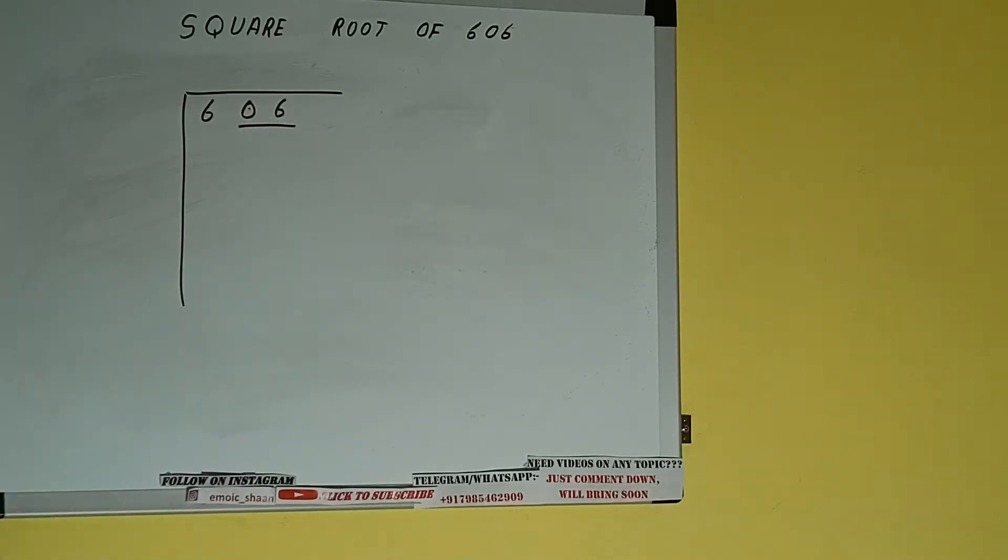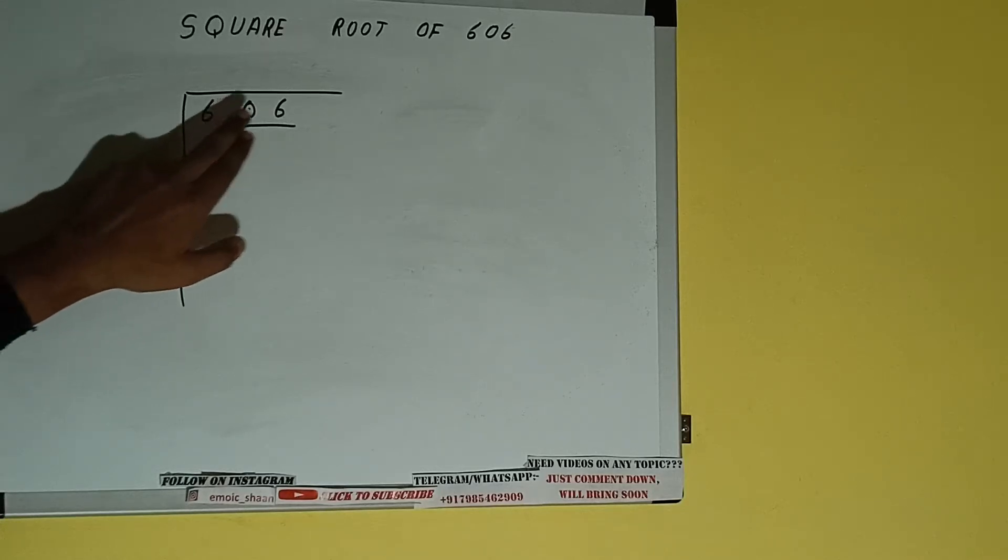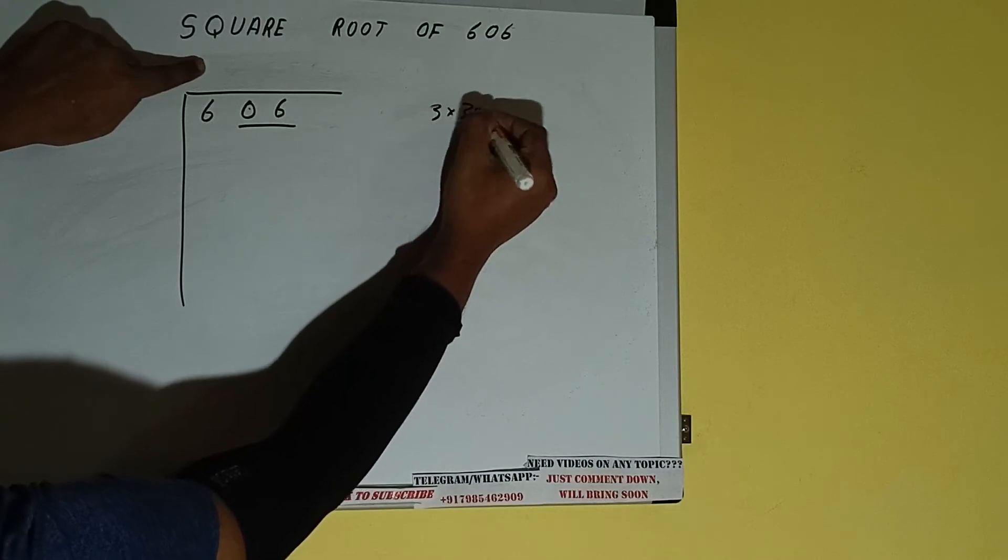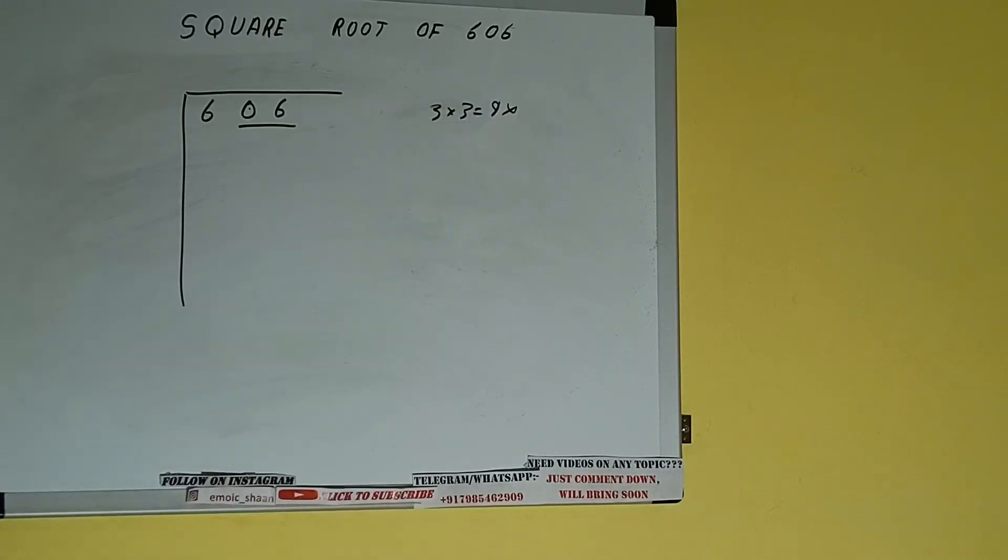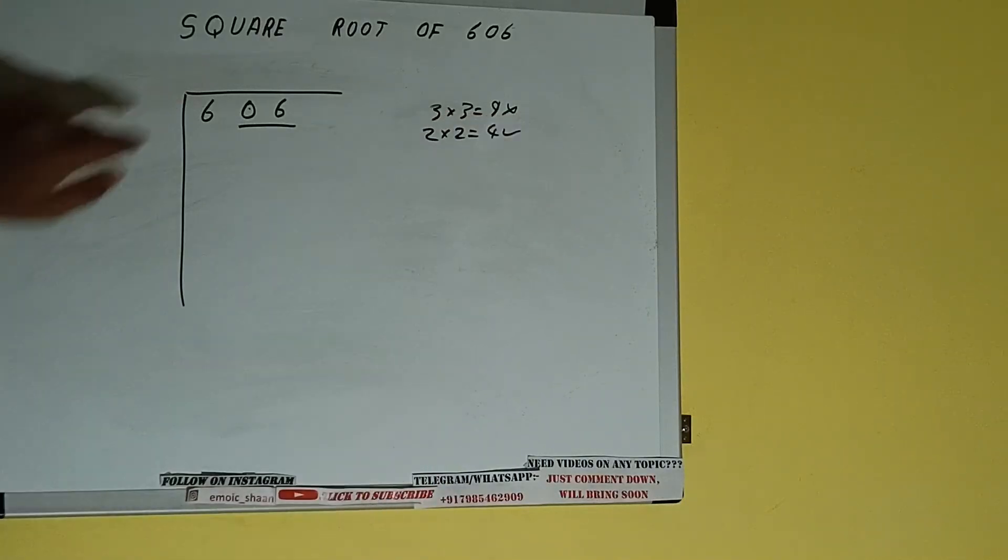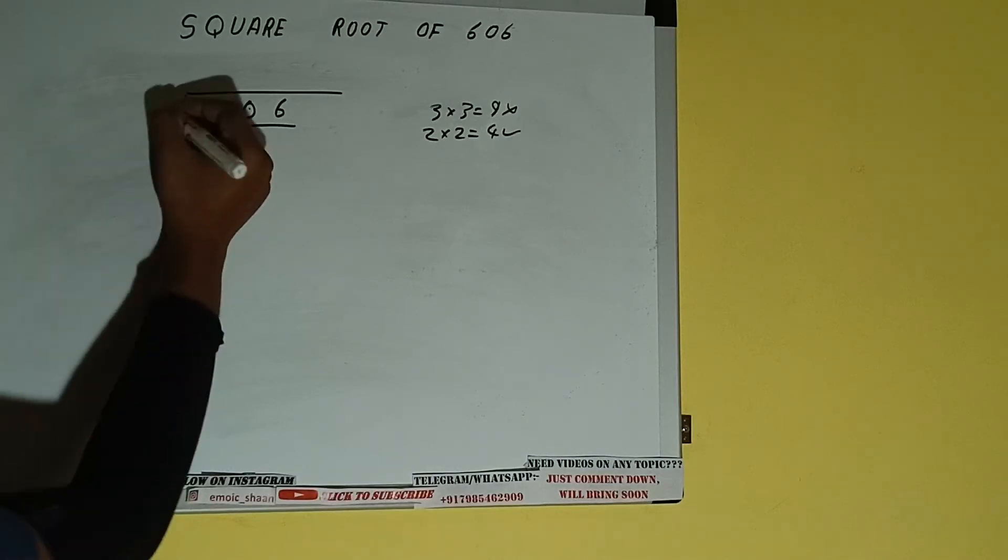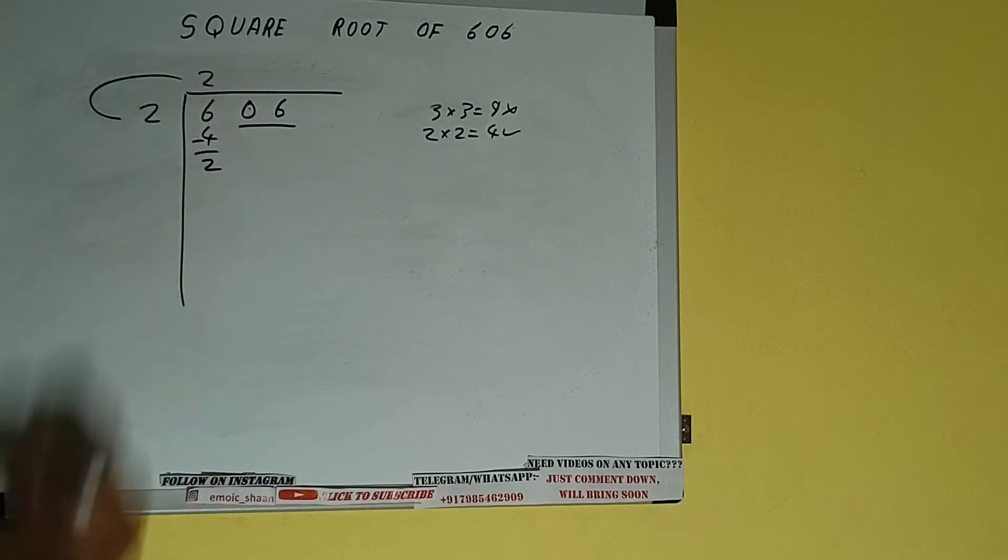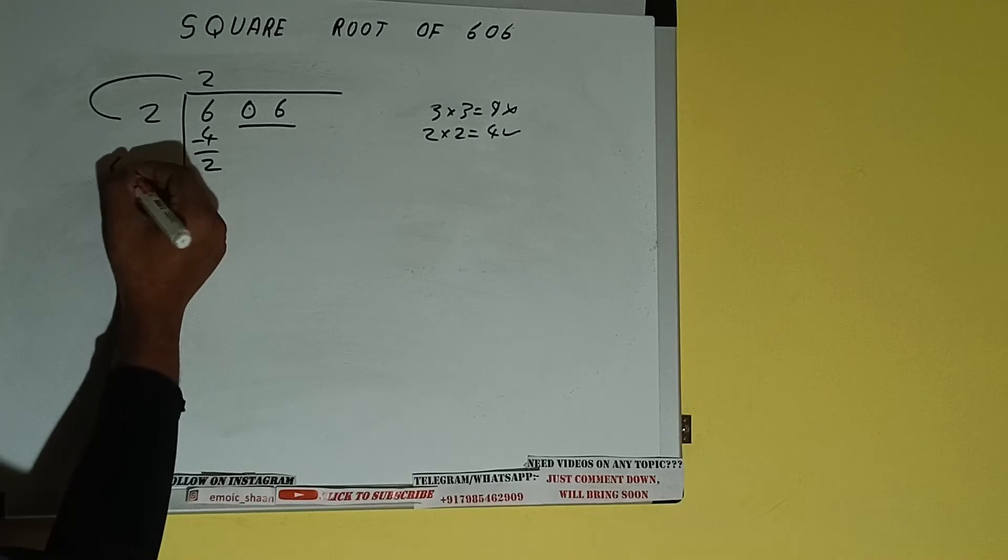First we'll divide this six, and then we'll bring down the pair. The rule is whatever number we write here, we have to write here also. So if we write 3 here and 3 here, it will be 9, which is greater than 6, so we cannot take it. If we write 2 here and 2 here, it will be 4, which is good to take. So 2 here and 2 here. 4 subtract, 2 will be left. We did 2 into 2, so add both. 2 plus 2 will be 4, write it here and keep a digit extra.